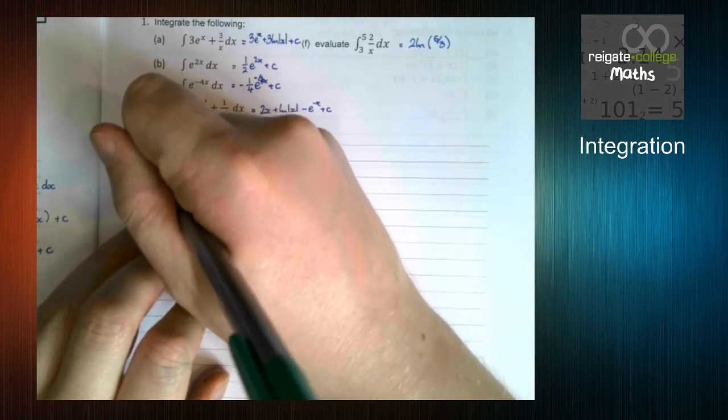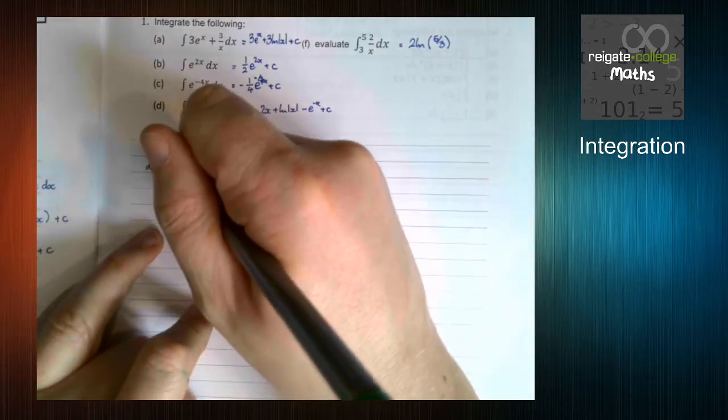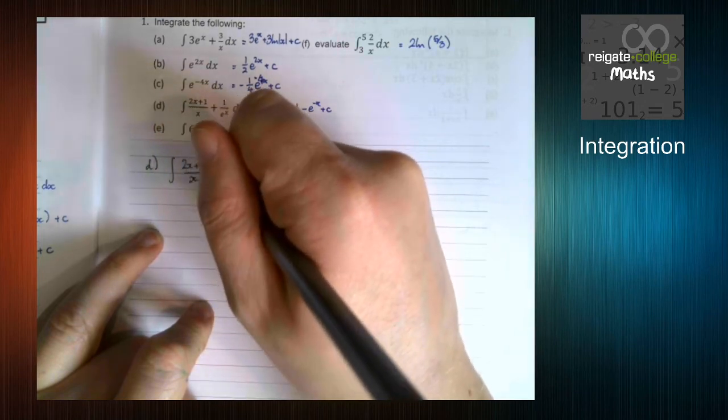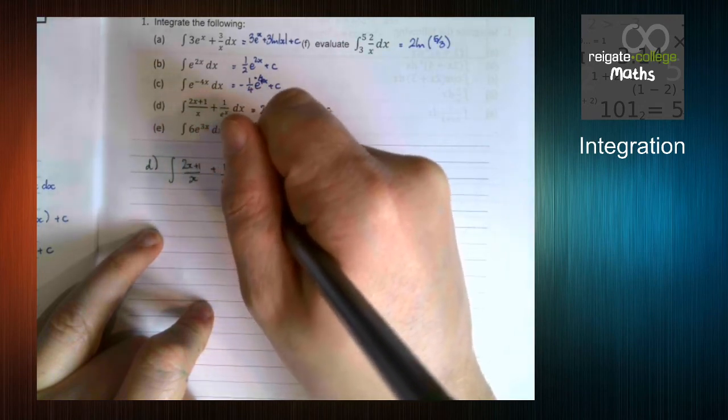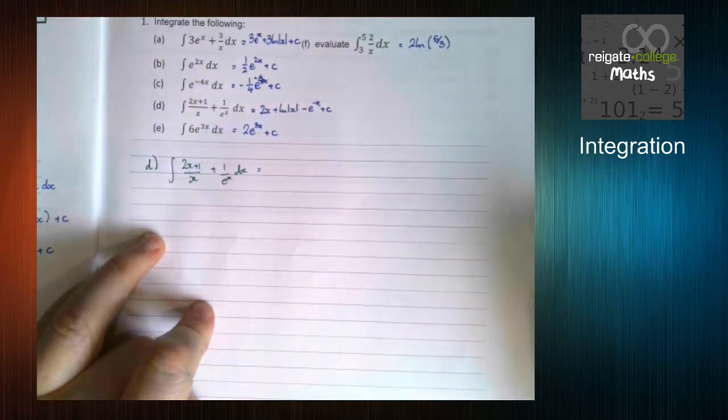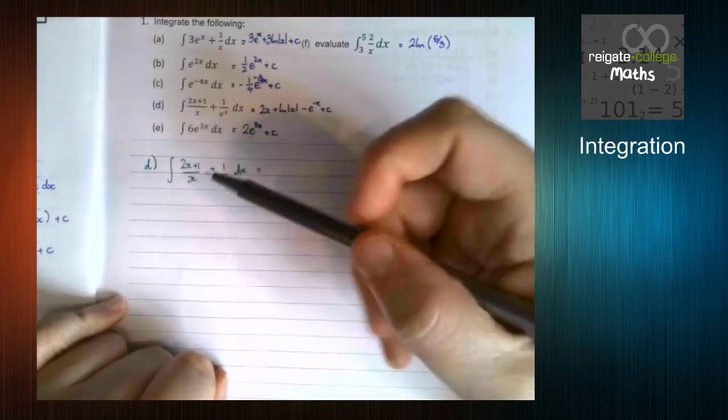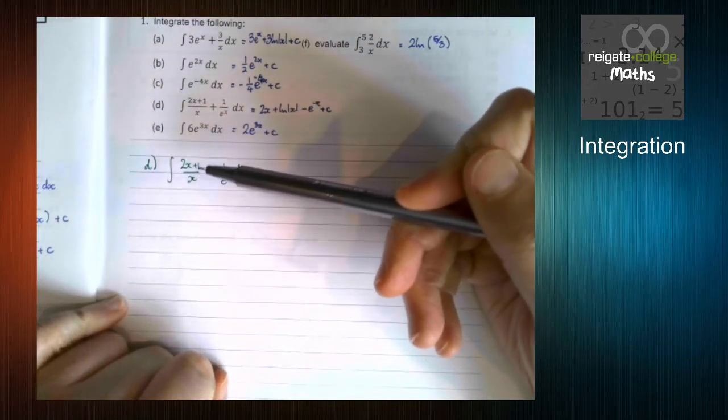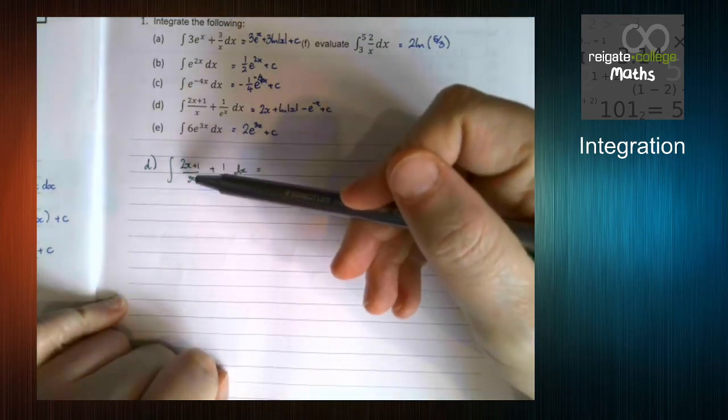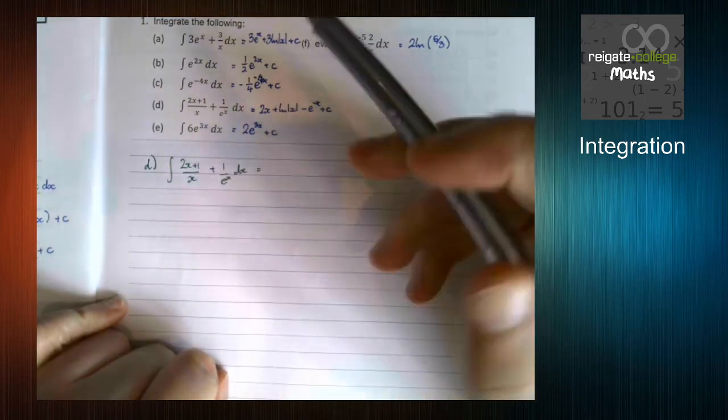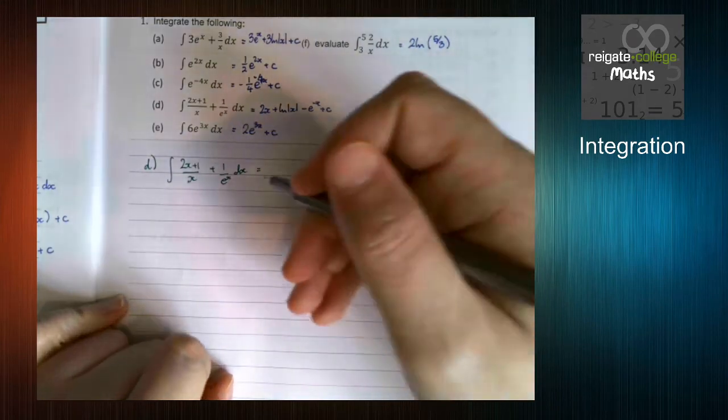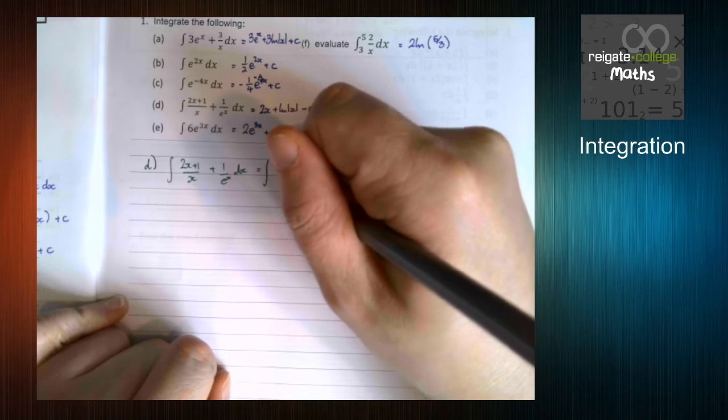So with part d, we can see we've got the integral of 2x plus 1 over x plus 1 over e to the x. Typically, and we'll see this later on, when we're integrating fractions, you should always look and see the relationship between the top and the bottom. In this case, we can see this one simplifies relatively easily. Later on, that's not necessarily going to be the case. But we still need to simplify it. So we need to split it up.